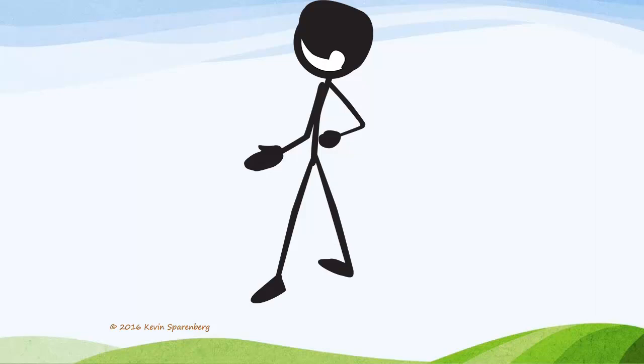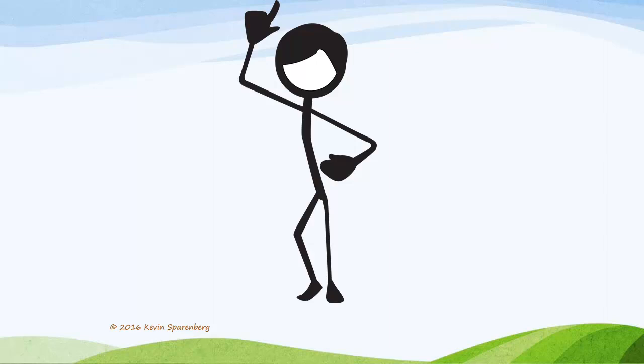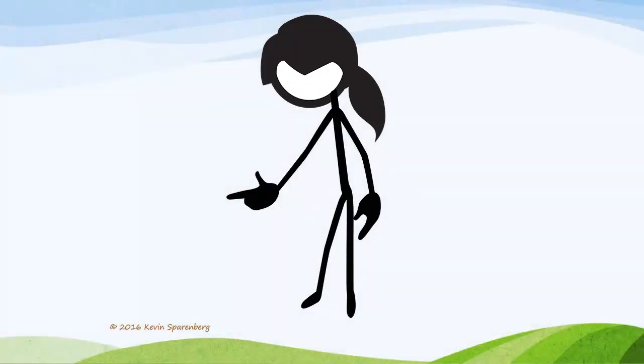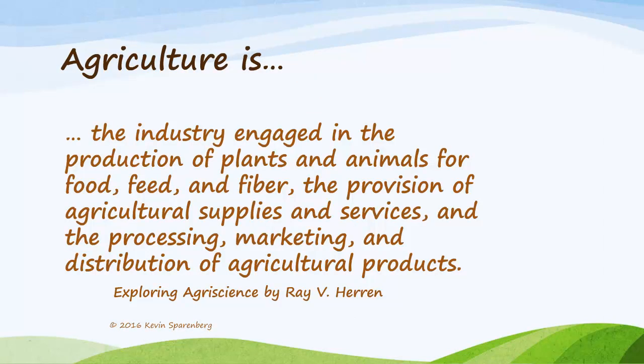Let's try a few quiz questions. True or false: the definition of agriculture is farming. If you chose false, you are correct. Remember, agriculture is much more than farming. True or false: agriculture is an industry and a way of life. True — agriculture is a business and also a way of life. Once again: agriculture is the industry engaged in the production of plants and animals for food, feed, and fiber, the provision of agricultural supplies and services, and the processing, marketing, and distribution of agricultural products.